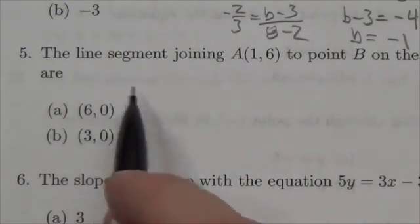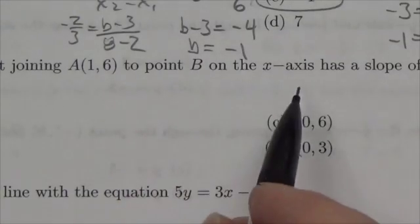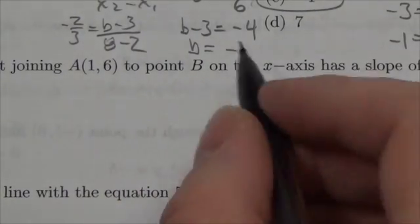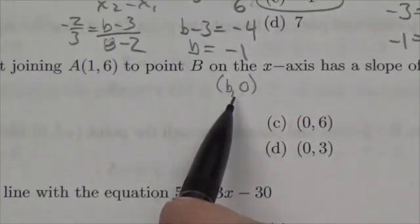Hi everyone, this question we're told that the line segment joining A, which is 1, 6, to a point B on the x-axis. Well we're not told a lot about that, but if it's on the x-axis, its y-coordinate is going to be 0.